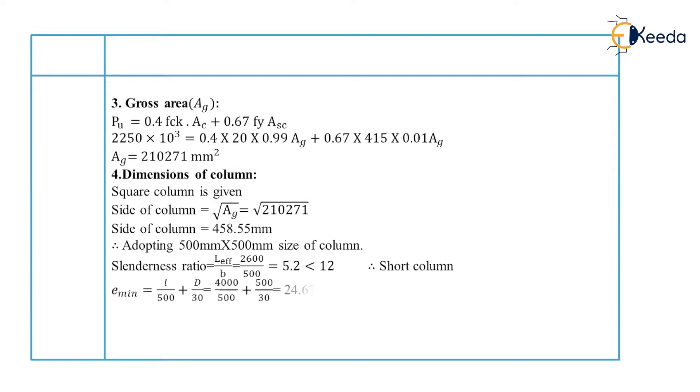Now we will check for the slenderness ratio. And for slenderness ratio we know that slenderness ratio is L effective upon B. B is least lateral dimension and it is 2600 upon 500 which is equal to 5.2 and it is less than 12. That means our column is short column.